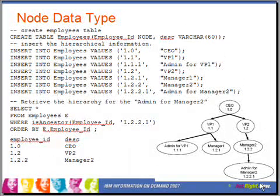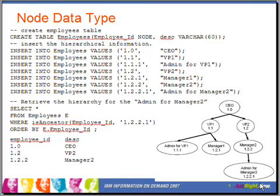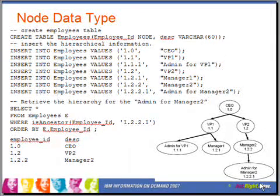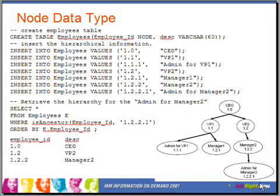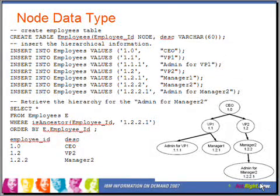The node data type helps you to denote each entity within the hierarchy with a sequence of numbers. As you can see here, CEO is tagged with 1.0, and for each of the subordinates we increment the digit after the decimal. For each of the VPs, we have numbers starting with the second decimal digit. Note that these are inserted as strings which are converted to integer node types.